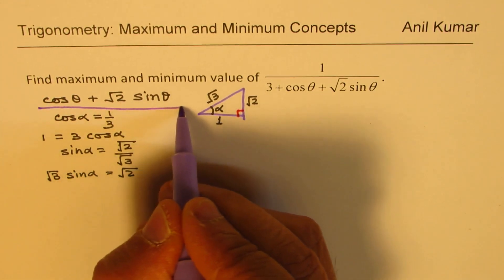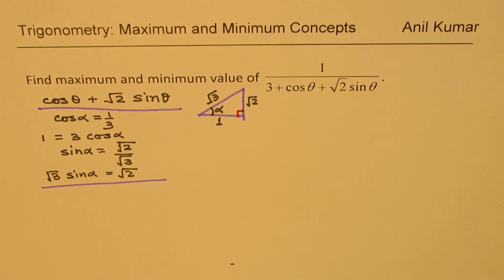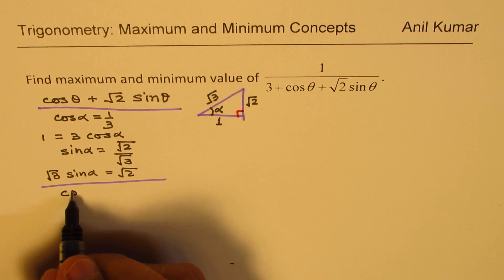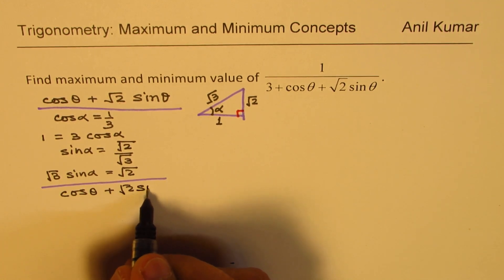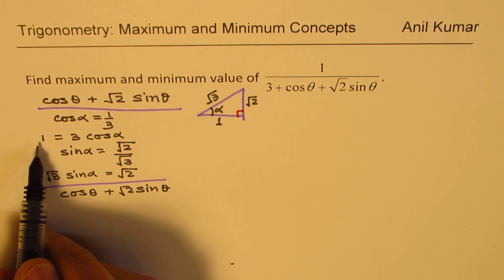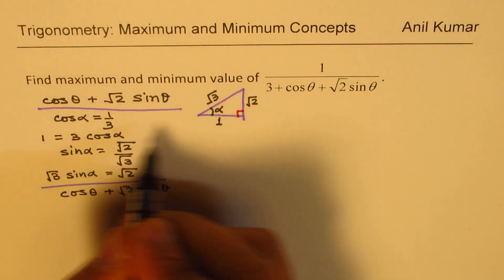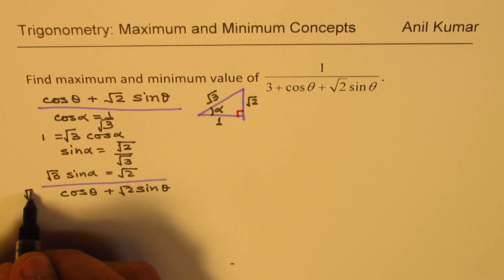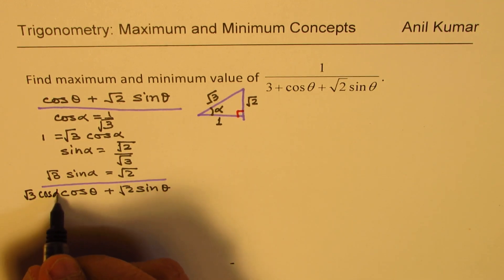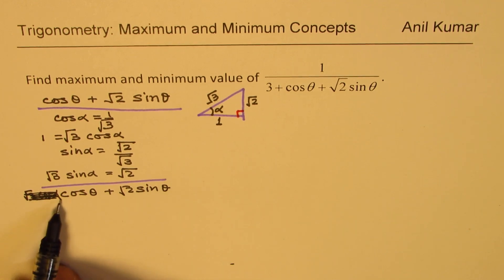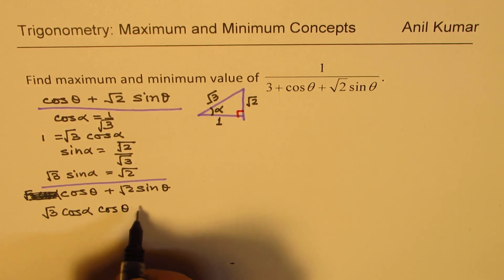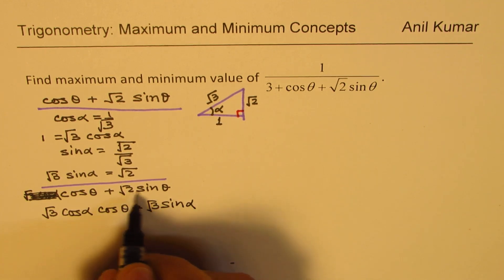So we got the values for √2 and 1. Now we can rewrite cos θ + √2 sin θ. Since 1 = √3 cos α, we write √3 cos α · cos θ, and since √2 = √3 sin α, we write + √3 sin α · sin θ.